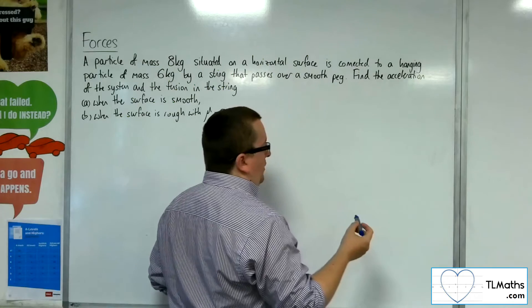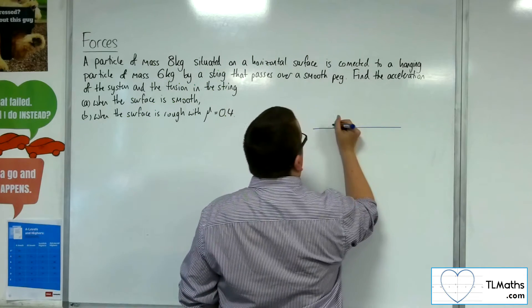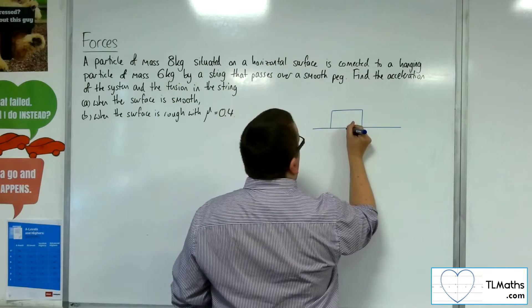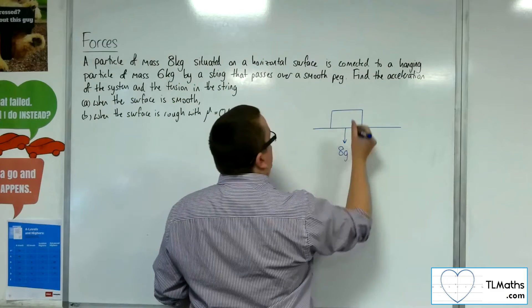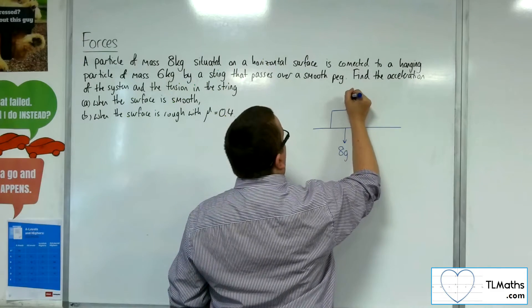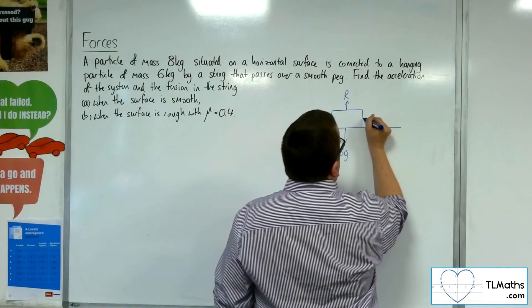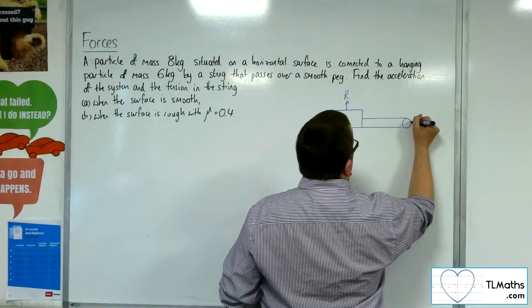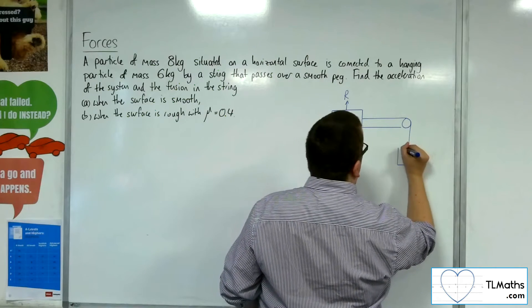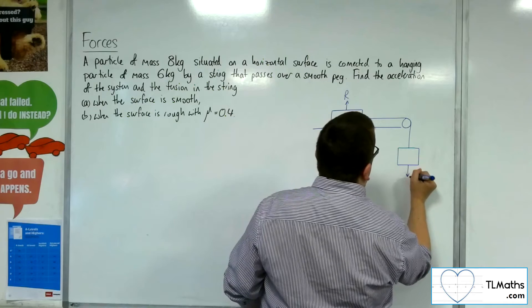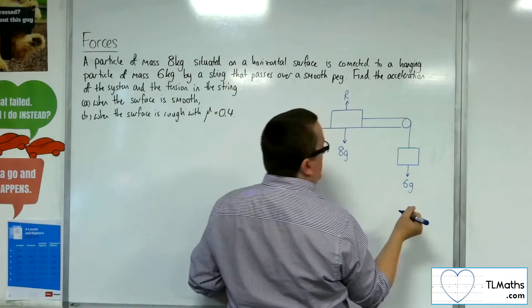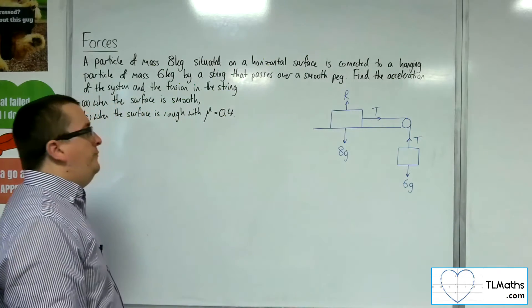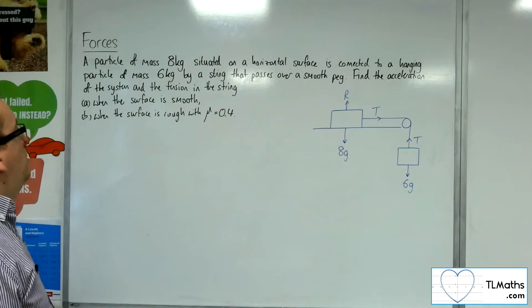So here is the horizontal surface. Here is the block with mass of 8 kilos. So weight of 8g, we're going to have a normal reaction force R, and that is connected by a string over a smooth peg to a second particle. This one has mass of 6 kilos, so it's got a weight of 6g. There will be tension in the string T. So this is the situation that we have.